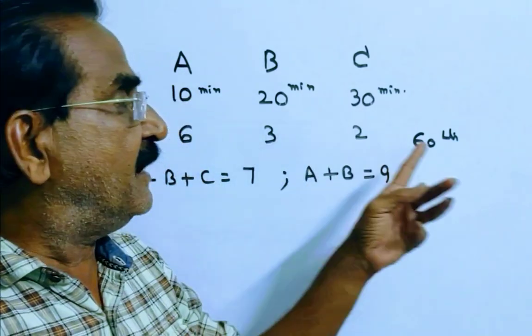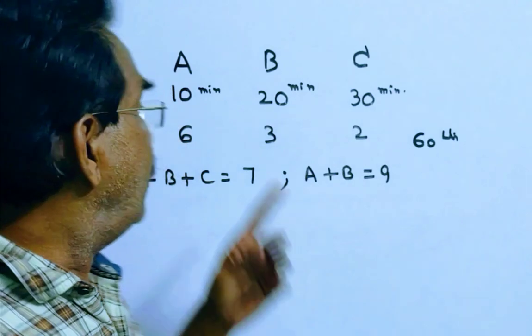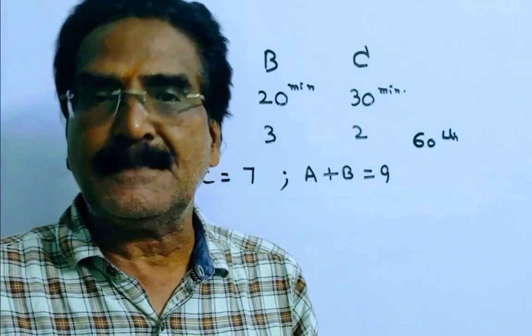Friends, pipe A can fill the tank in 10 minutes. Pipe A can fill 60 divided by 10, so pipe A can fill 6 liters per minute.